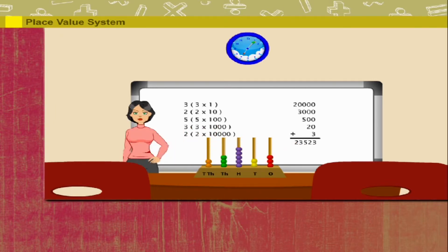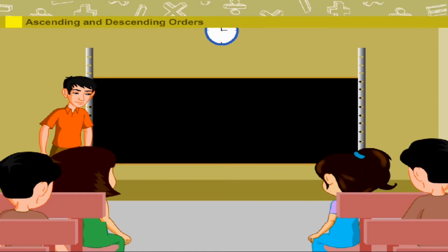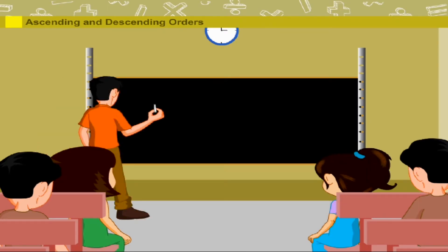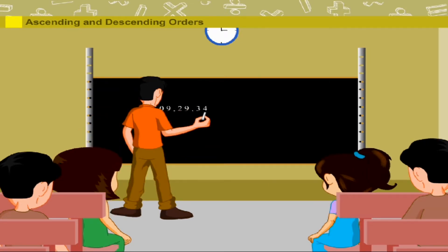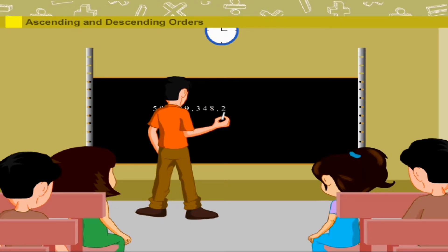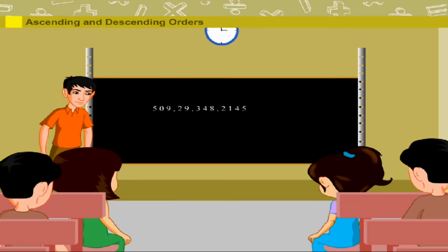Ascending and Descending Orders. Raman writes numbers five hundred and nine, twenty-nine, three hundred and forty-eight, and two thousand one hundred and forty-five on the blackboard. He asks Shinu to arrange the numbers in increasing order.